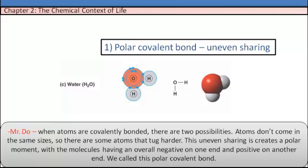When atoms are covalently bonded, there are two possibilities. Atoms don't come in the same size, so there are some atoms that tug harder. This uneven sharing creates a polar moment, with the molecules having an overall negative on one end and overall positive on another end. We call this a polar covalent bond.